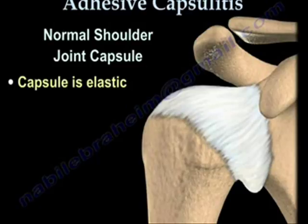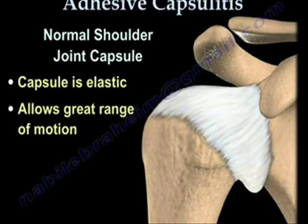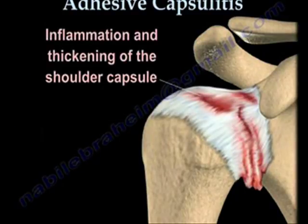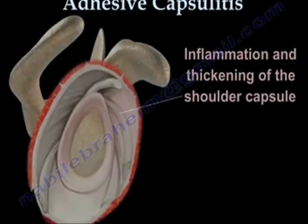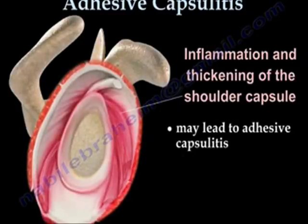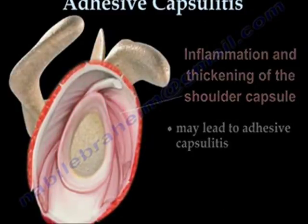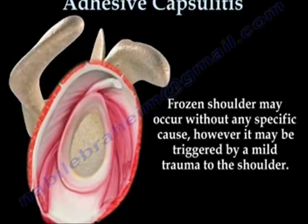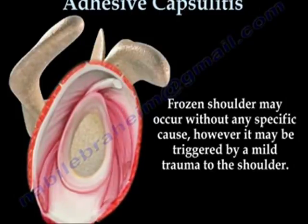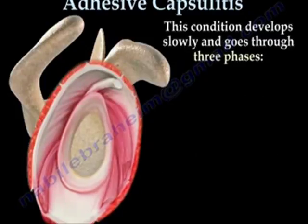The capsule is elastic and allows a great range of motion of the shoulder. With inflammation and thickening of the capsule, the condition will lead to adhesive capsulitis. Frozen shoulder may occur without any specific cause; however, it may be triggered by a mild trauma to the shoulder. This condition develops slowly and goes through three phases.